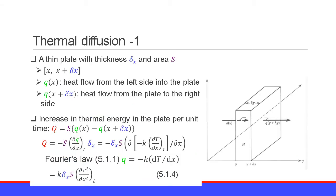Here, let us discuss thermal diffusion. Let us consider a thin plate with thickness delta X and area S. The left side of the plate is at coordinate X and the right side is at coordinate X plus delta X. Q_X is heat flow from the left side into the plate, and Q_{X+deltaX} is heat flow from the plate to the right side. The increasing thermal energy in the plate per unit time is equal to the area S times the difference of heat coming in and heat going out.